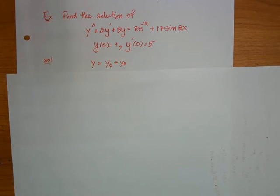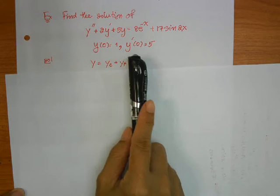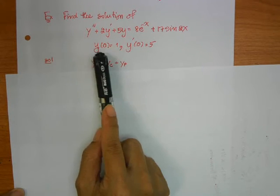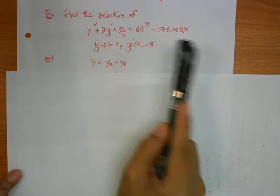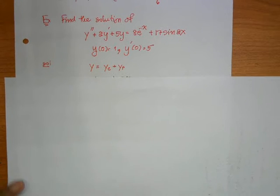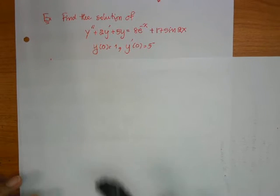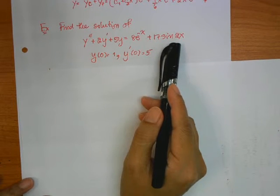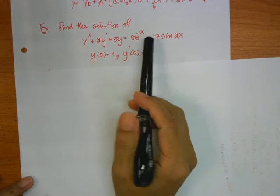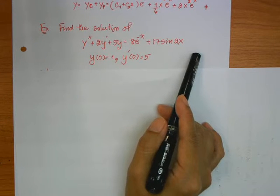The next example: find the solution of this function. This problem statement is asking you to find the solution which satisfies two boundary conditions. We are going to consider whether the f(x) on the right-hand side is a function. On the left-hand side you have two functions: the first one is exponential of minus x, and the second one is sine 2x.